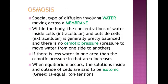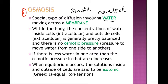The final type of passive transport is osmosis. Osmosis is exactly the same as diffusion, but it applies to just one molecule in particular — water. Osmosis is the diffusion of water from where there is a lot to where there is little, across the membrane — from one side of the cell where there is a lot of water to the other side where there is less. Water moves back and forth across the membrane all the time trying to keep the inside and outside of the cell in balance.